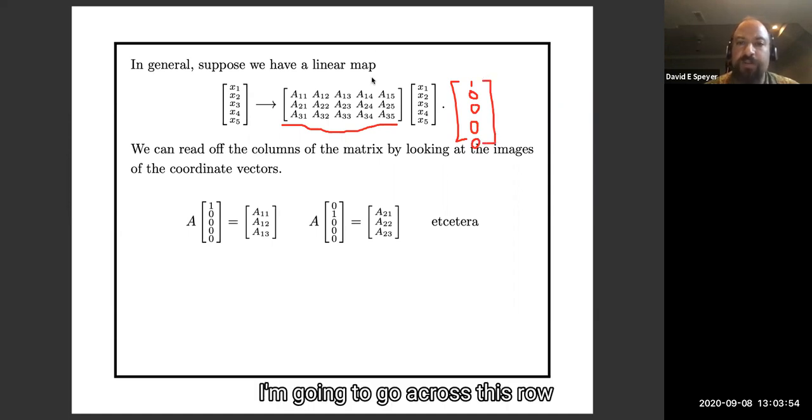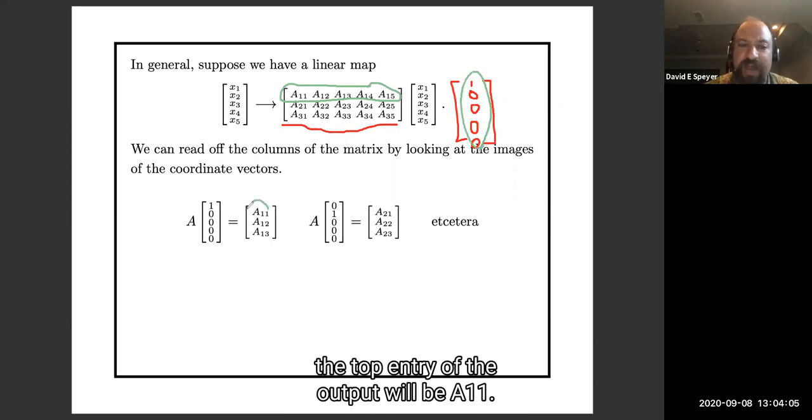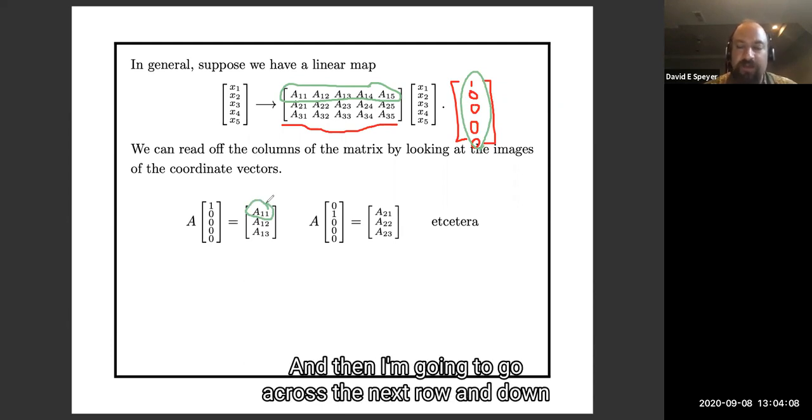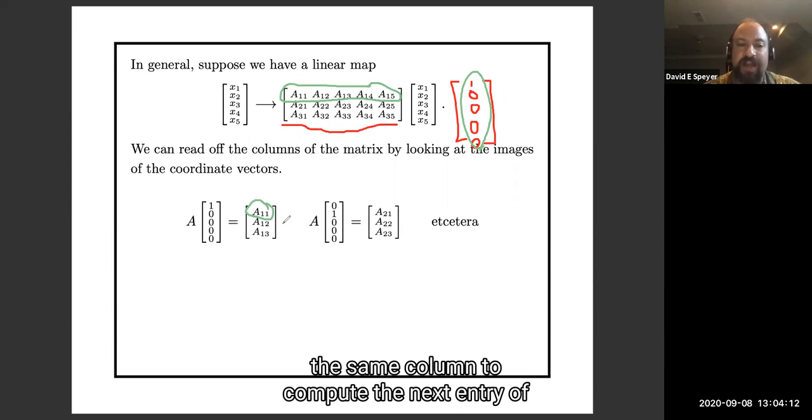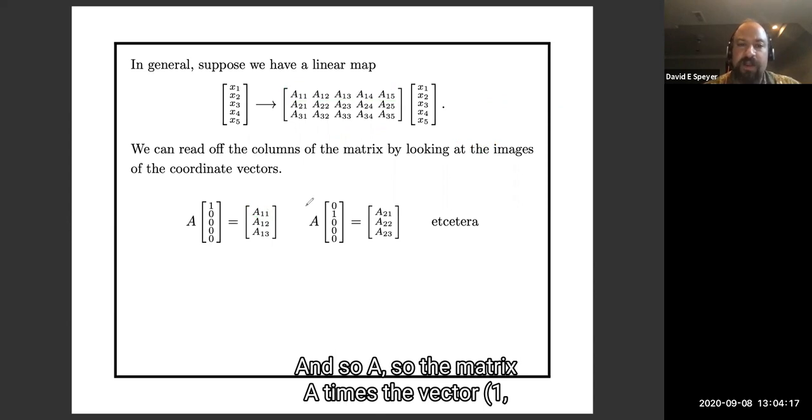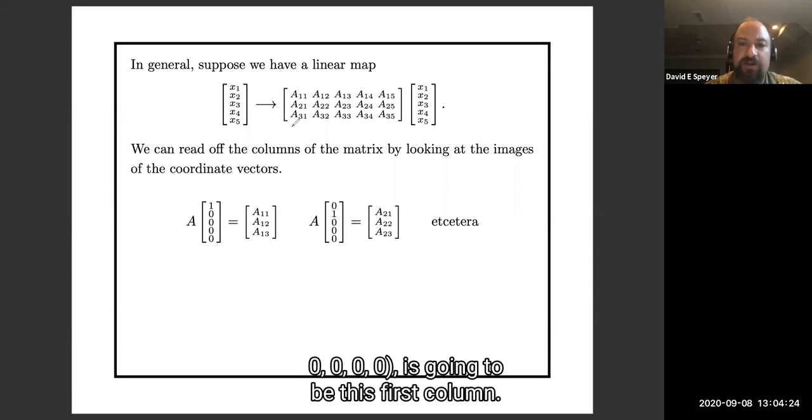I'm going to go across this row and down this column to compute that the top entry of the output will be a 1, 1, and then I'm going to go across the next row and down the same column to compute that the next entry of the output will be a 1, 2, and so forth. The matrix A times the vector 1, 0, 0, 0, 0 is going to be this first column.